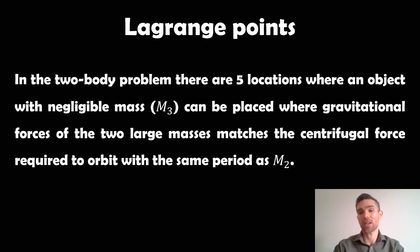So you have to use a rotating reference frame, and there's five locations that are static to those two objects as it's orbiting around, where a third mass, some third mass negligible mass, so very small mass, can be placed where gravitational forces of the two larger masses matches the centrifugal force required to orbit the same period as the smaller of the two larger masses. We're using centrifugal force because it's in a rotating reference frame.